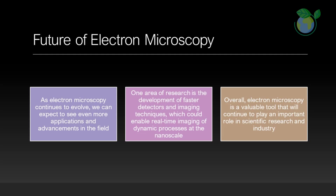As electron microscopy continues to evolve, we can expect to see even more applications and advancements in the field. One area of research is the development of faster detectors and imaging techniques, which could enable real-time imaging of dynamic processes at the nanoscale. Additionally, the use of artificial intelligence and machine learning could help to automate image analysis and interpretation, making electron microscopy more accessible and efficient. Overall, electron microscopy is a valuable tool that will continue to play an important role in scientific research and industry.